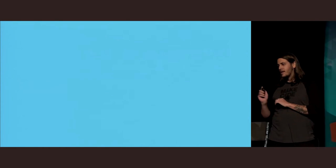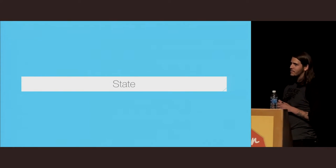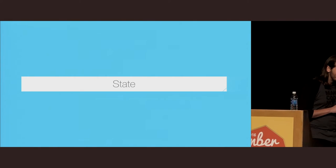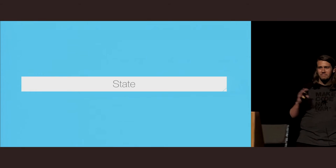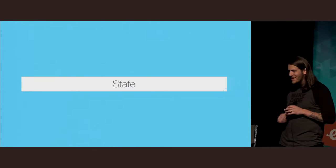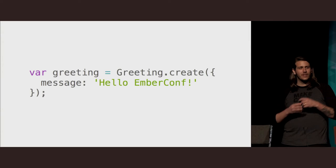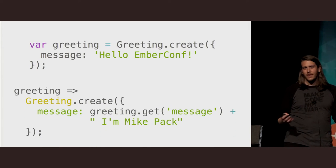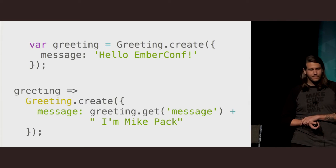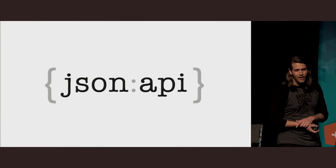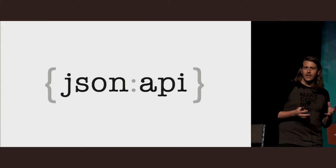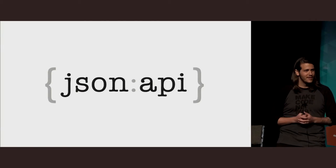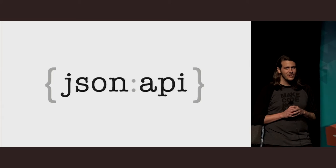I'm here today to talk to you about state. The reason I want to talk about state is that it seems to haunt me everywhere I go. Decisions about representing state in an object-oriented fashion, or transforming state in a functional style. Decisions about the structure and means of transferring state across the wire. Thankfully, we have tools like JSON API.